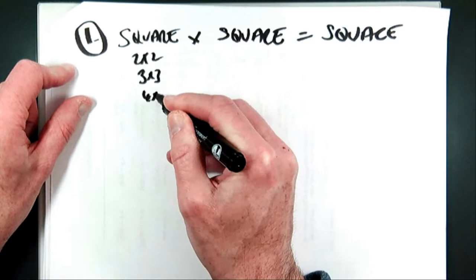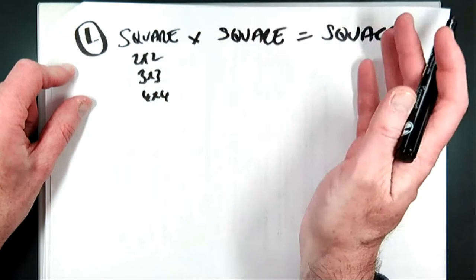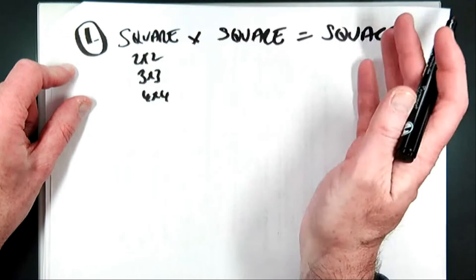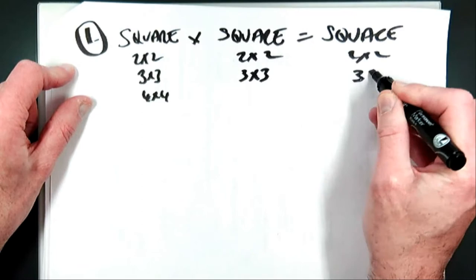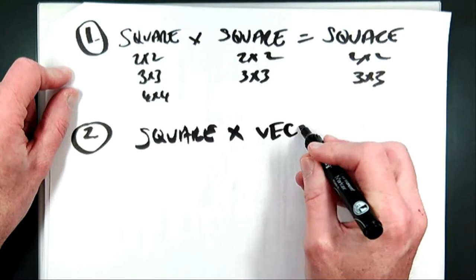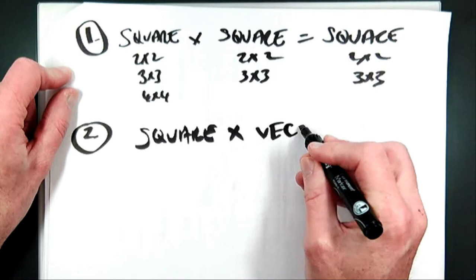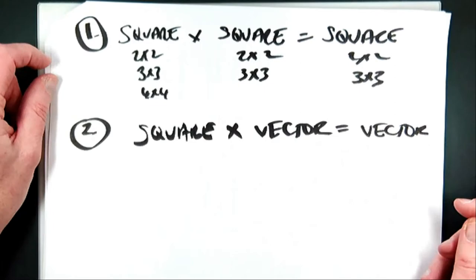A square would be a 2×2, or a 3×3, or a 4×4. This square matrix has to have the same dimension as the other one before you can do the multiplication. So if this is a 2×2, you get a 2×2; if this is a 3×3, you get a 3×3. The other type of matrix multiplication is when you're multiplying a square matrix by a vector, and when you do that you get a vector. Those are the two main types of matrix multiplication.